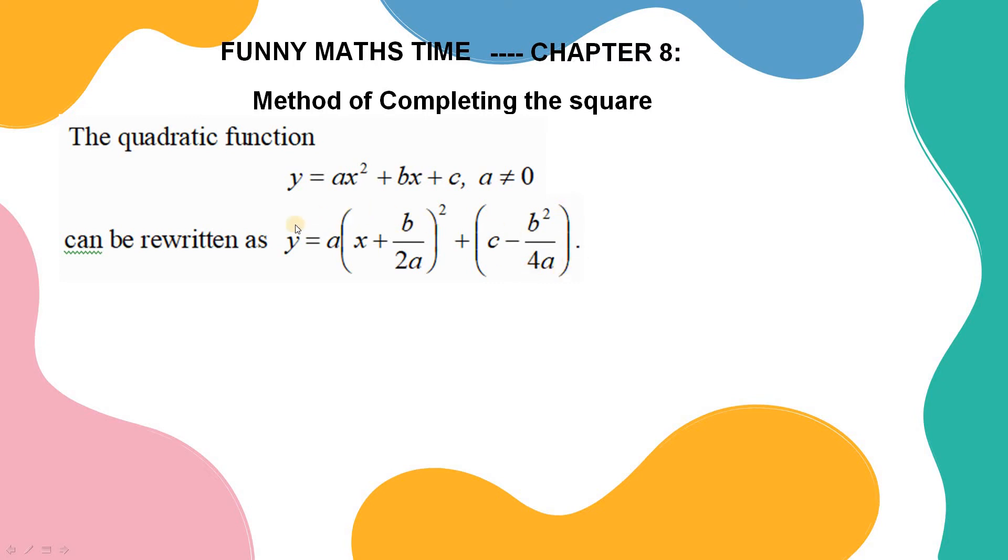In this case, we can write the vertex of the quadratic function directly. The vertex is equal to minus b over 2a, c minus b squared over 4a.